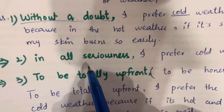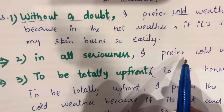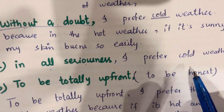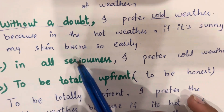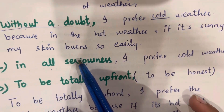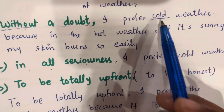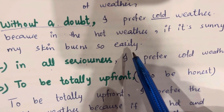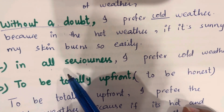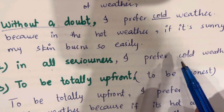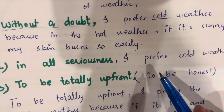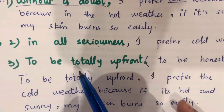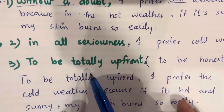You can also answer this way: 'In all seriousness, I prefer cold weather because if it's sunny, my skin burns so easily.' The third way to answer is to use 'to be totally upfront': 'To be totally upfront, I prefer cold weather because in the hot weather, if it's sunny, my skin burns so easily.'